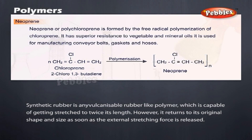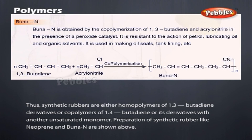Synthetic Rubbers: Synthetic rubber is any vulcanizable, rubber-like polymer which is capable of getting stretched to twice its length; however, it returns to its original shape and size as soon as the external stretching force is released. Synthetic rubbers are either homopolymers of 1,3-butadiene derivatives or copolymers of 1,3-butadiene or its derivatives with another unsaturated monomer. Preparation of synthetic rubbers such as neoprene and Buna-N are shown above.